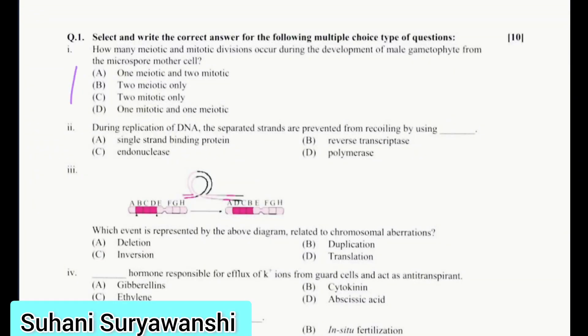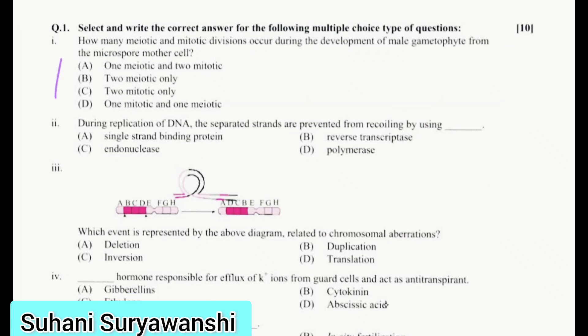Let's continue with answers. How many meiotic and mitotic divisions occur during development of male gametophyte from microspore mother cell? Answer is one meiotic and two mitotic divisions. During replication of DNA, separated strands are prevented from recoiling by using single strand binding protein.